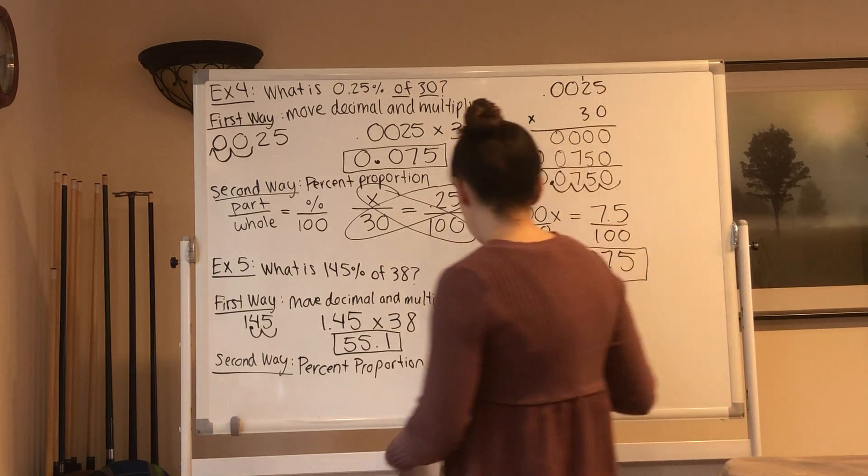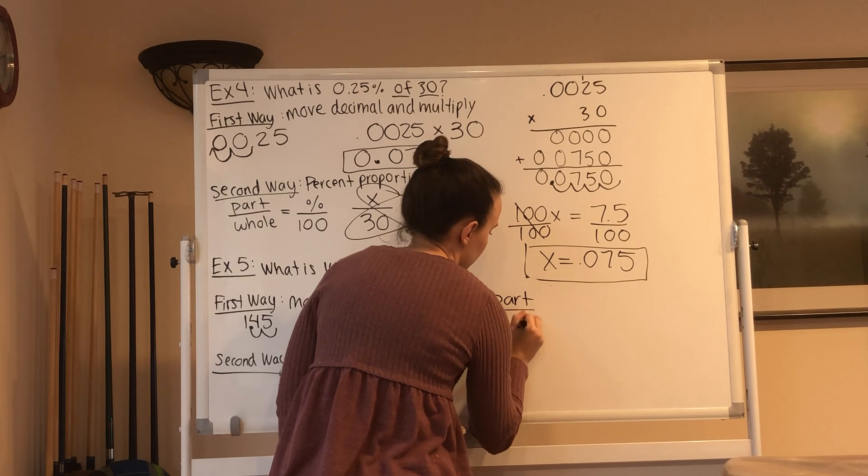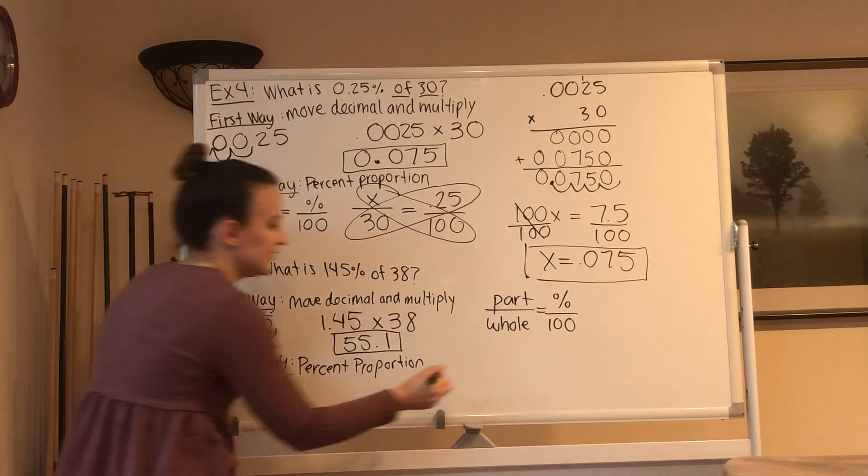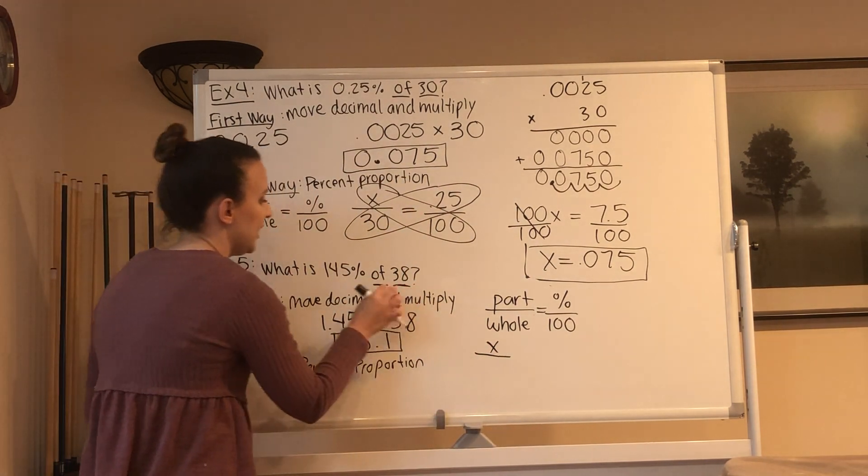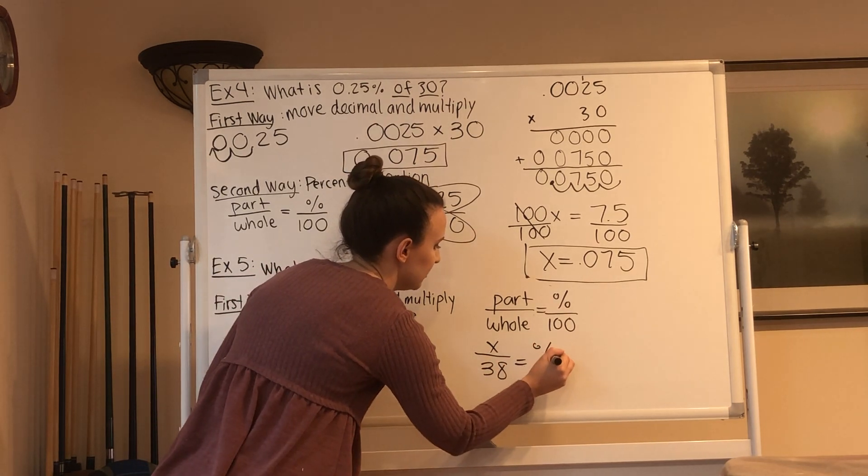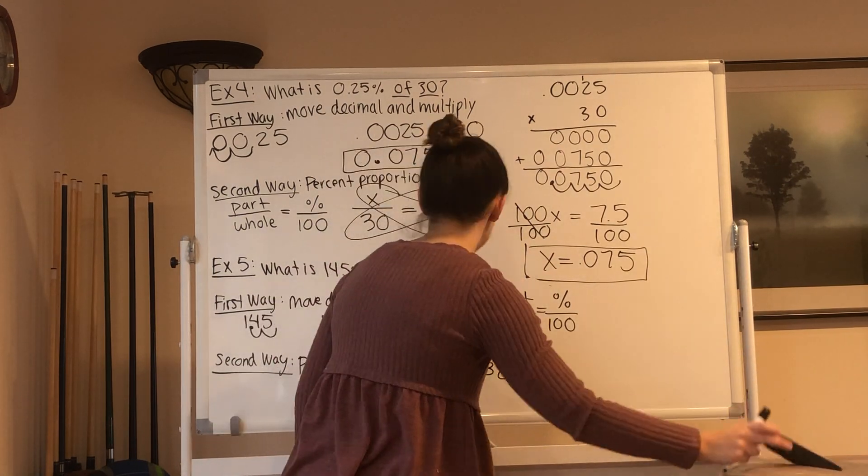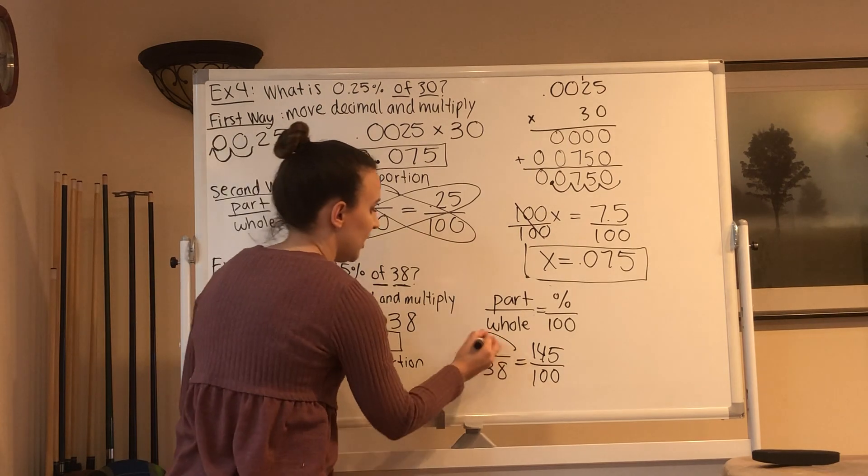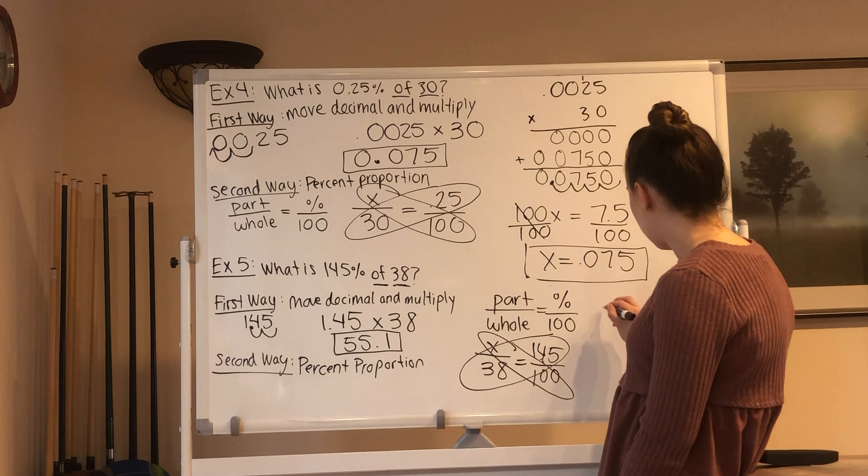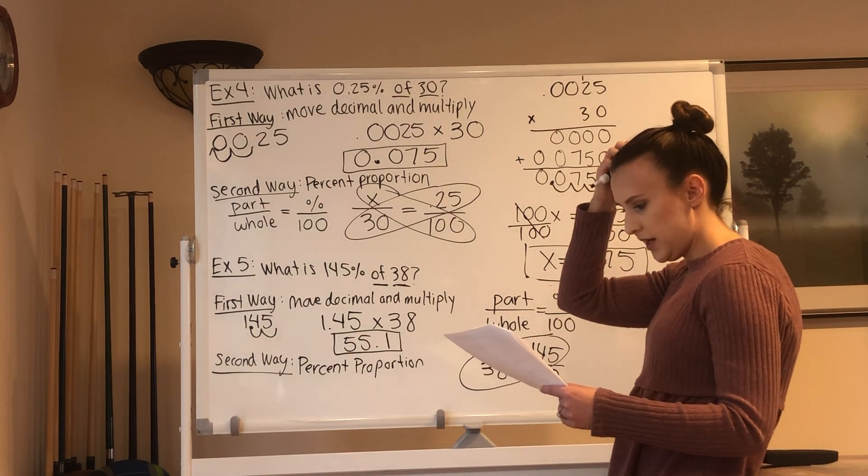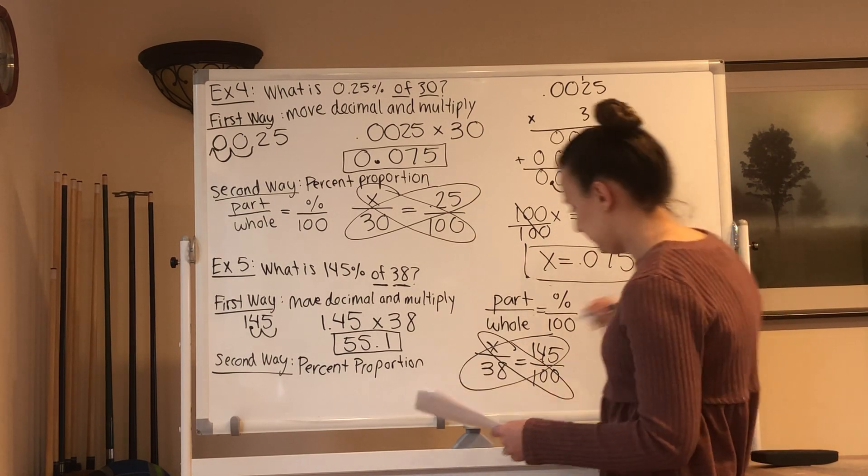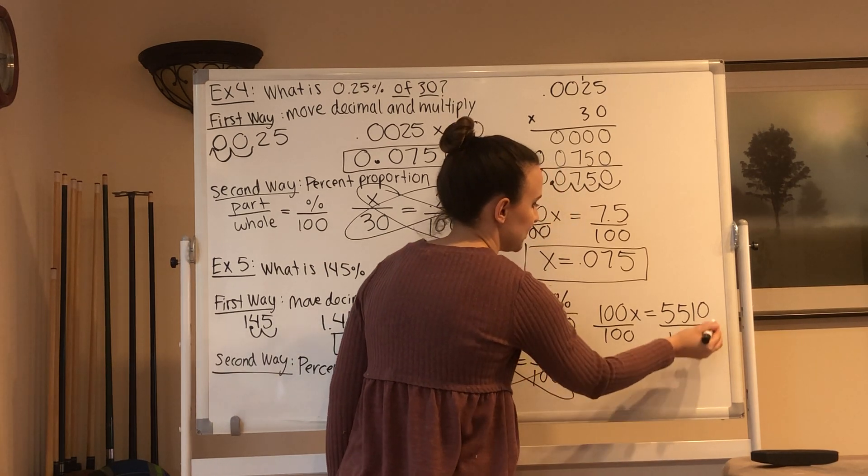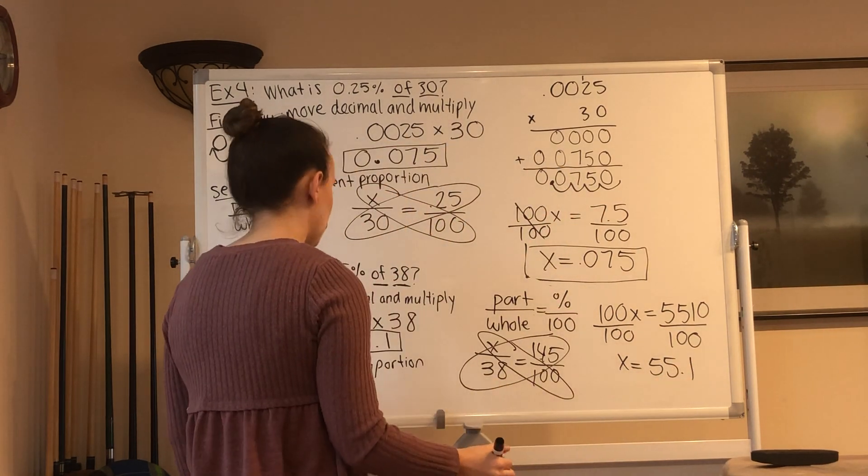Percent proportion. That's the next way. I'm going to erase this so I have some room. Percent proportion. Part over whole equals percent over 100. Our part is what we're looking for. It says what it is. We don't know what it is. So we're going to put x there. Over whole. Of 38. Of is your whole. Percent. We know the percent. The percent is 145 percent over 100. Now we multiply. x times 100 is 100x. Equals 145 times 38 is 5510. Divide by 100. Divide by 100. 55.1. Same answer.